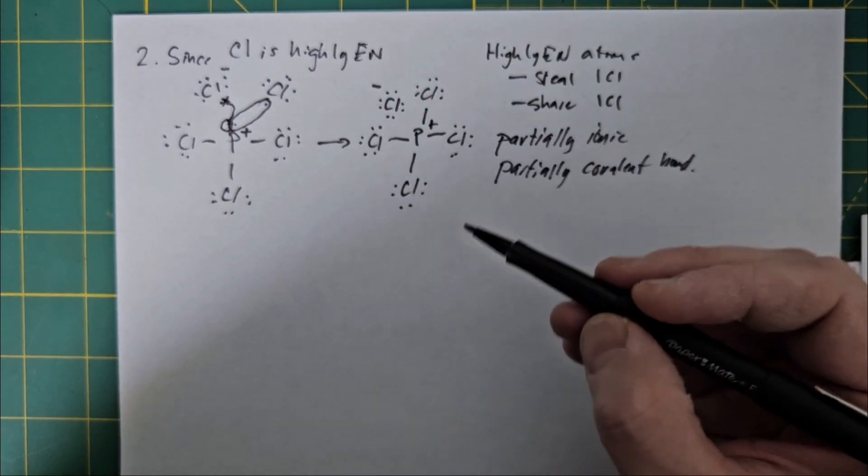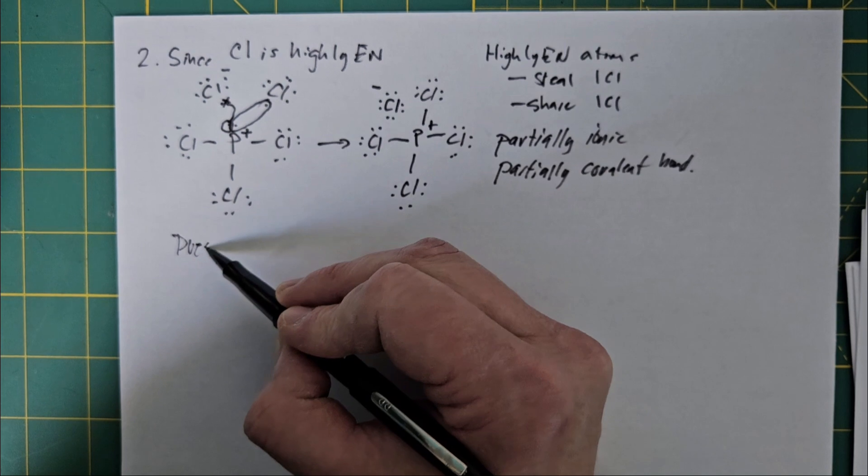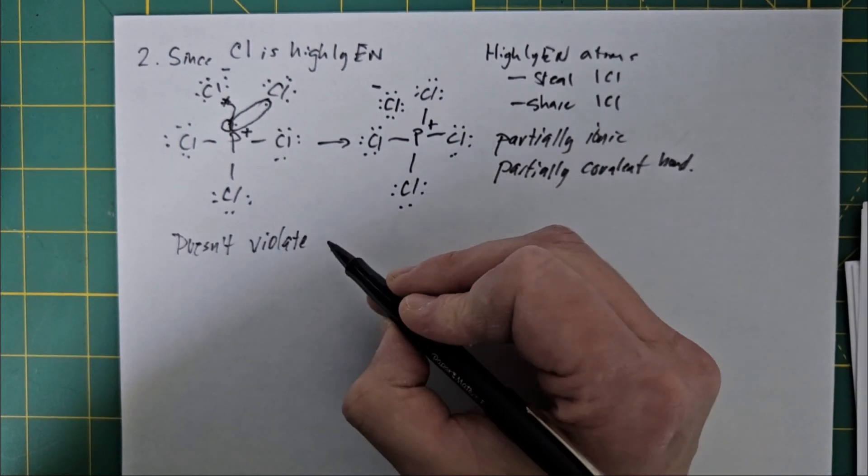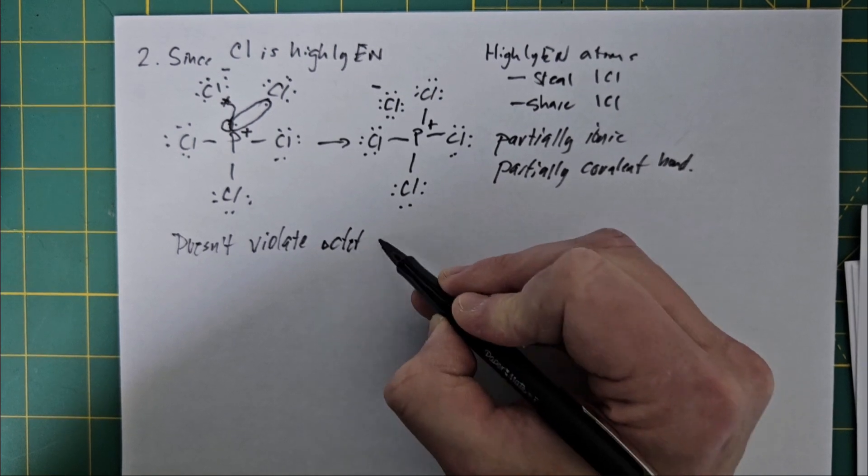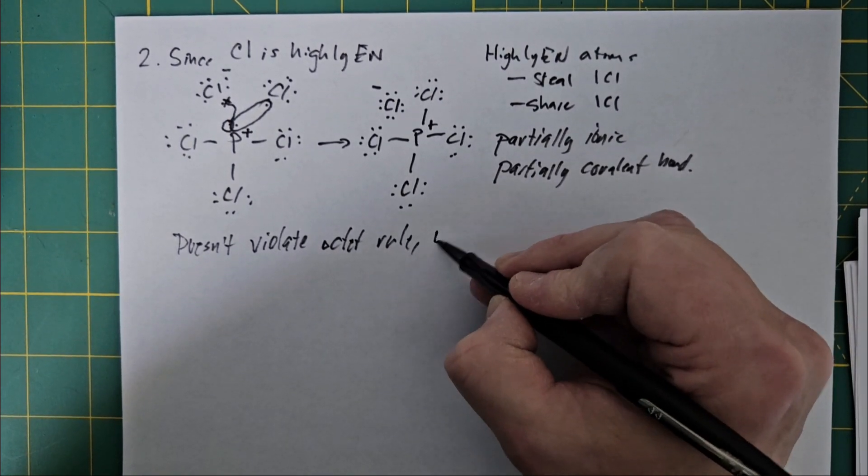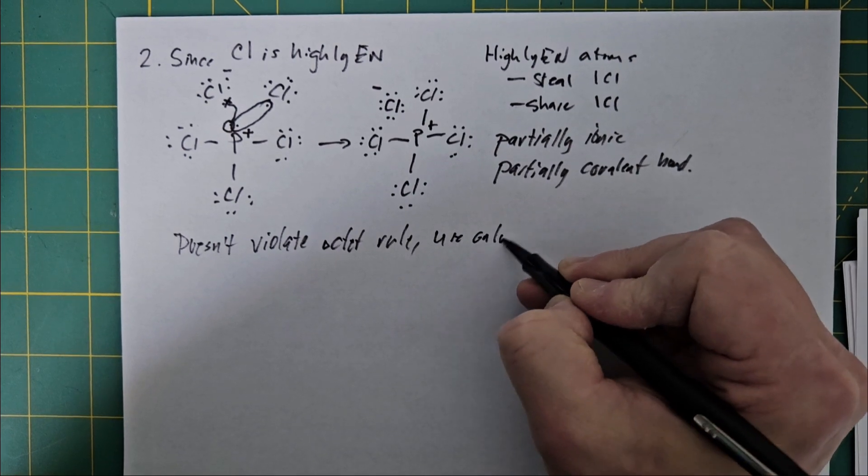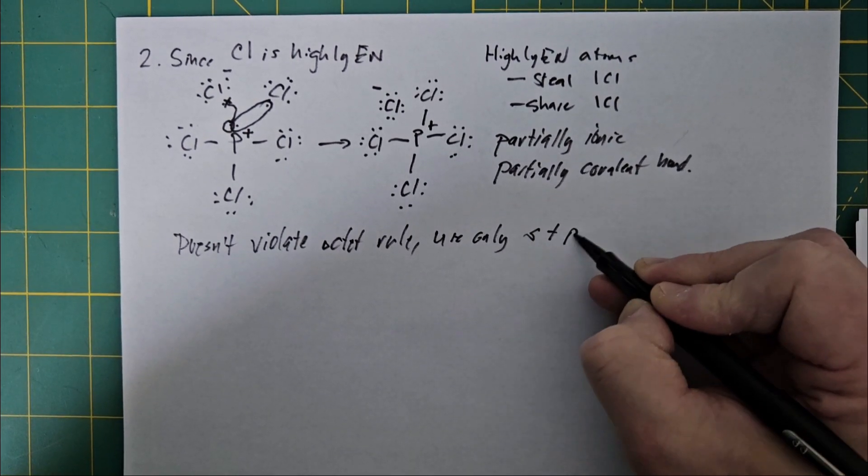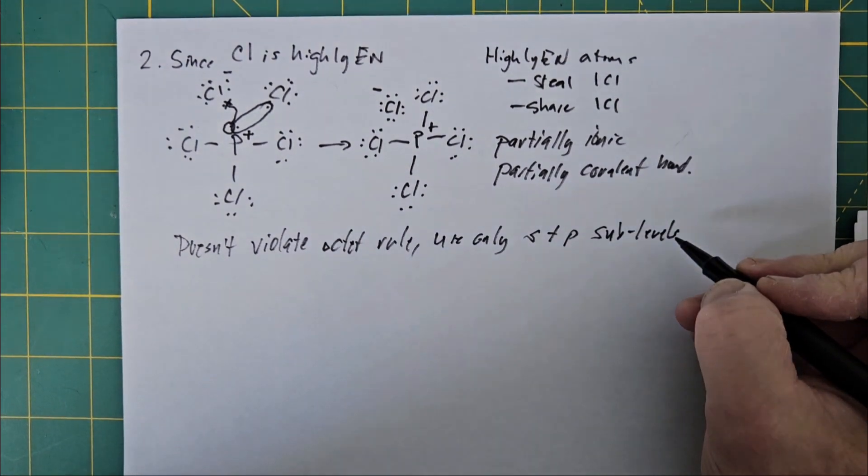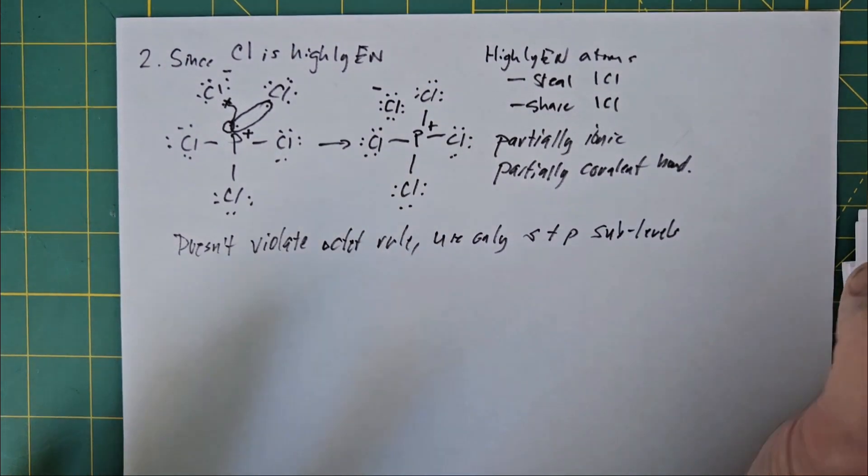So the advantages for this is it doesn't violate the octet rule. I use only the s and p sublevels, which are your normal valence electrons. I don't have to invoke any d's.